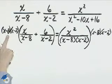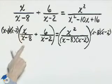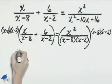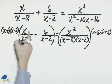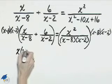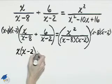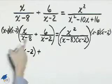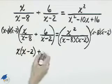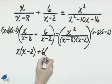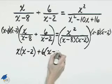x minus 8 times x minus 2 times x over x minus 8 gives us that numerator of x times this factor x minus 2. x minus 2 here will cross-divide, and so we have plus 6 times the factor x minus 8.